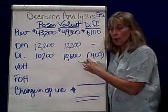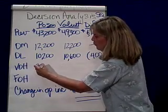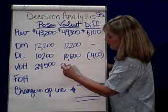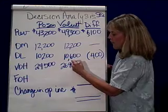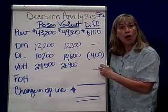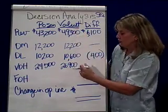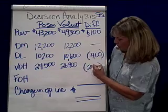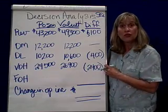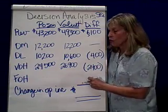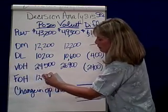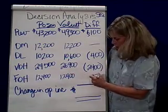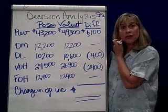For variable overhead, the problem states that variable overhead is $24,500 for the Pozen machine and $26,900 for Value A. It does cost us more to use the Value A machine, and the amount is $2,400 — so notice these are negatives. Finally, fixed overhead is $12,400 for both. Is there a differential cost? No — so it's irrelevant to the decision at hand.